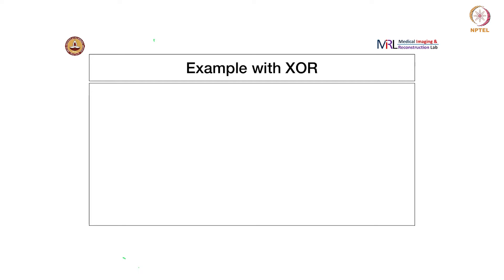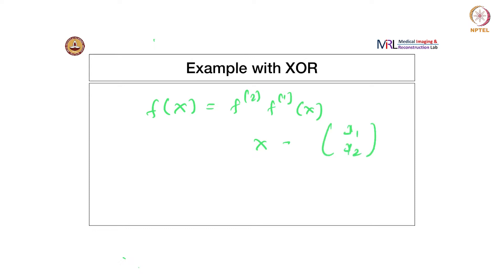Let us see if we can solve this XOR function using a one-layer neural network. Our neural network is going to be written as F of X is equal to F2 of F1 of X, where X is the inputs X1 and X2, two Boolean variables.